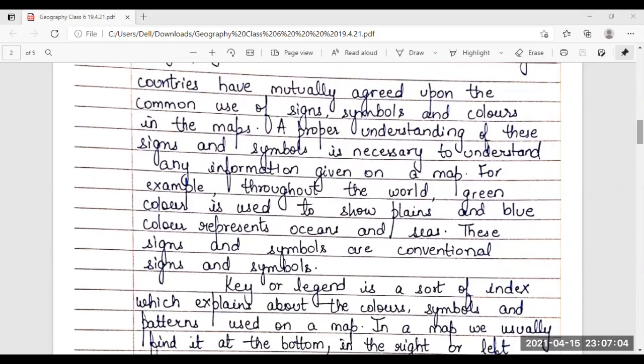For example, throughout the world, green color is used to show planes and blue color represents oceans and seas. These signs and symbols are conventional signs and symbols.